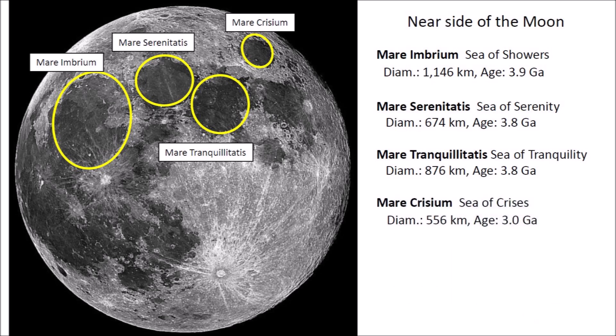Mare Crisium, the Sea of Crisis, has a diameter of 556 kilometers and an age of 3,000 million years. These four impact basins were created during the time of the late heavy bombardment. Notice their huge sizes — they are all much bigger than any craters that we can find on the Earth today. Mare Imbrium, with a diameter of 1,146 kilometers, is thought to have been made by the collision of an asteroid with a diameter of 250 kilometers.